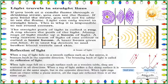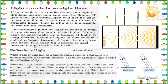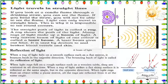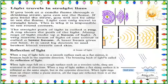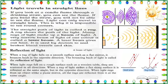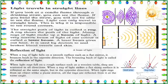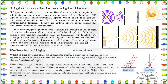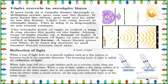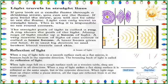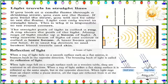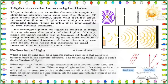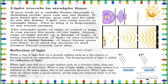A laser beam gives out heat. It is used by doctors to see broken blood vessels and skin. Reflection of light: when a ray of light falls on a smooth surface such as a flat mirror, it bounces back in the opposite direction. The bouncing back of light is called the reflection of light. When light rays fall on a rough surface such as a wooden table, they are scattered in all directions. When a ray of light strikes a flat shiny surface, it is reflected at the same angle but in the opposite direction.